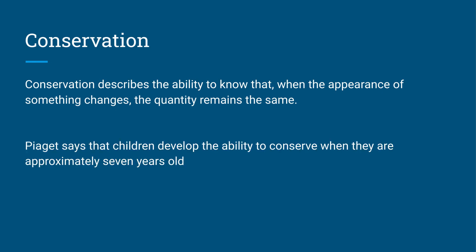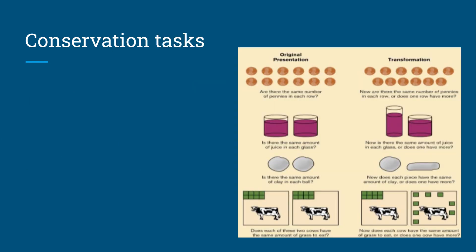Piaget says that children develop the ability to conserve when they're about seven years old, so most of you will understand it because you have that ability. If you look at the top line with the counters, a young child, when presented with both rows of counters, will say there's the same amount. Then when we squeeze the bottom row and put them closer together, they'll say the top row has more counters because they're more spread out. There are a few different examples where young children under seven would really struggle — they would not understand that, although the shape changes, the quantity in each is the exact same.